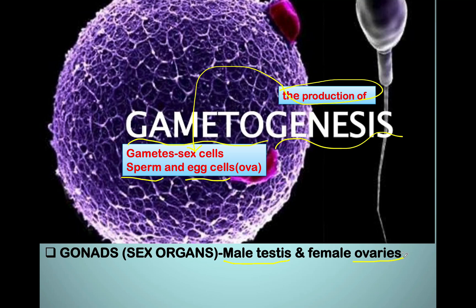So what have we learned? Gametogenesis means the production of gametes, which are the sex cells — meaning it's the production of the sperm cells and the egg cells. Gametogenesis is a process taking place in the gonads, meaning in the sex organs of the male and the female. In the male it takes place in the gonads known as the testes, and in the female it takes place in the gonads known as the ovaries.